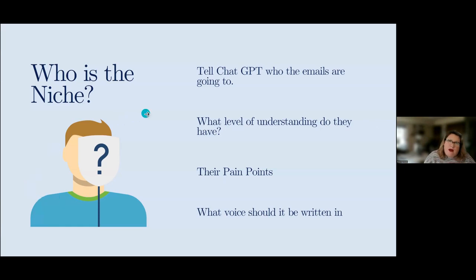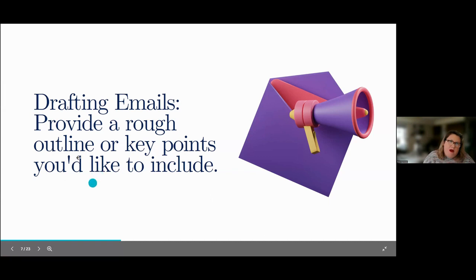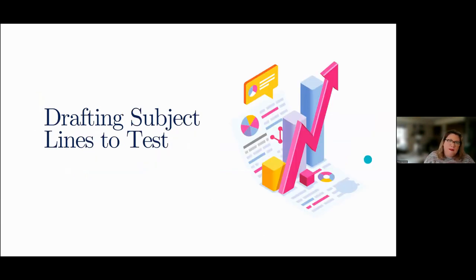I go into quite the detail. I tell ChatGPT exactly who I'm writing to, the level of their understanding, their pain points, and what kind of voice to write it in — professional, friendly, understanding, and able to explain very well. I also give it key points I'd like included in the email, and I have it draft several subject lines to test and get a good idea of what will make someone open the email.